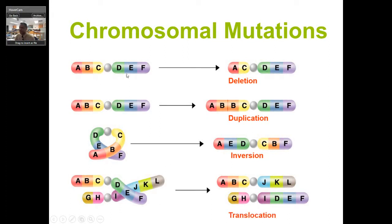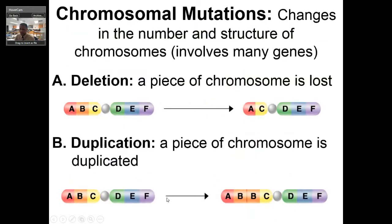I'm going to focus on two types of chromosomal mutations: duplication and a special type called translocation. Deletion can be harmful — you can end up with conditions like Cri-du-chat where you lose a segment of a chromosome. Duplication can also be harmful: an extra chromosome 21 causes Down syndrome, and an extra 13 causes Patau syndrome. I'll show how this can happen and how someone can carry it without being harmed.